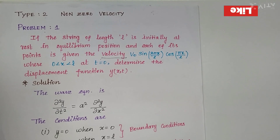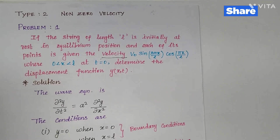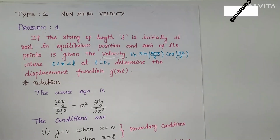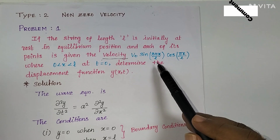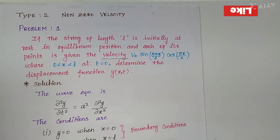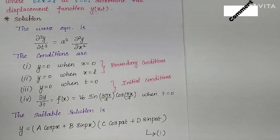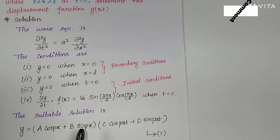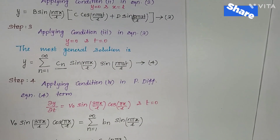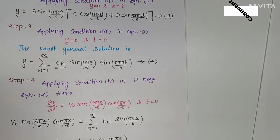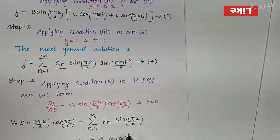To recap: we took one problem for non-zero velocity where the velocity was given in terms of sin. We wrote the wave equation, the boundary conditions, the displacement condition at t = 0, and the velocity condition. We wrote the suitable solution and applied conditions step by step — steps 1, 2, 3, and 4 — obtaining the most general solution in cn form.